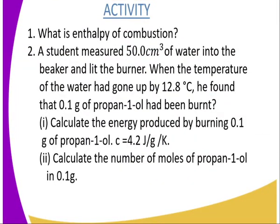Let's check our understanding by answering these questions. Question 1: What is enthalpy of combustion? A student measured 50 cm³ of water into a beaker, lit a burner, and when the temperature had risen by 12.8°C, found that 0.1 grams of propanol had been burned. Calculate the energy produced. Given: specific heat capacity = 4.2 J/g/K. Question 2: Calculate the number of moles of propanol in 0.1 grams.